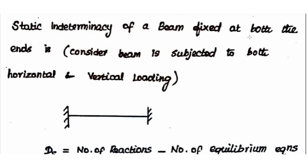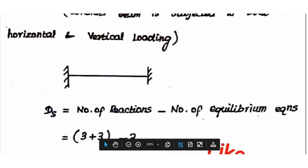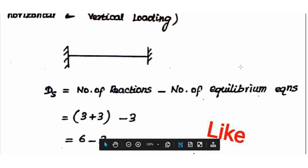Example: static indeterminacy of a beam fixed at both ends. Consider the beam subjected to both horizontal and vertical loading. For each fixed end, the number of reactions is 3. With two fixed ends, total reactions = 3 + 3 = 6. Number of equilibrium equations = 3 (horizontal force = 0, vertical force = 0, moment = 0). Degree of static indeterminacy = 6 − 3 = 3.